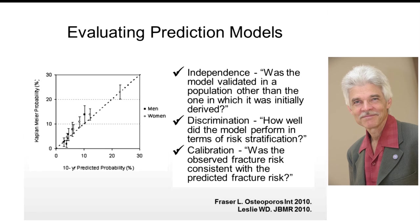The FRAX calculator for Canada was developed and validated using two large cohorts: the Canadian Multicenter Osteoporosis Study and the Manitoba BMD cohort, together comprising almost 45,000 individuals. It was possible to compare the FRAX-predicted risk of fracture against the observed risk in samples independent from the national fracture data used to develop the model. The dotted line of identity showing perfect agreement between prediction and observation demonstrates very good agreement for men and women across a range of risk categories. The Canadian FRAX calculator has been well validated in the Canadian population.